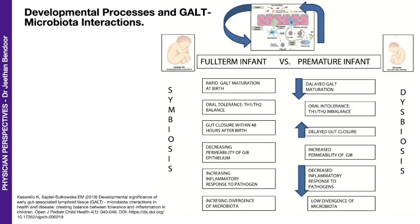In a full-term infant where symbiosis happens, there is rapid GALT maturation at birth. Oral tolerance happens because of a balance between TH1 and TH2 types of cells — I'll talk about this in another episode. Gut closure happens within 48 hours after birth. There is decreasing permeability of the gastrointestinal barrier epithelium, an increased inflammatory response to pathogens, as well as increasing divergence of the organisms that live in the gut — the microbiota.